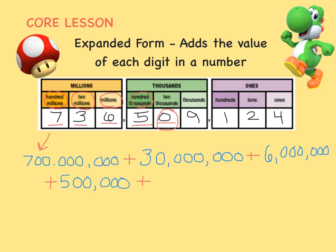So we can skip the zero and move on to the nine, which is in the 1,000's place, so its value is 9,000. The one is in the 100's place, so its value is 100. The two is in the 10's place, so its value is 20. And the four is in the 1's place, so its value is just 4.